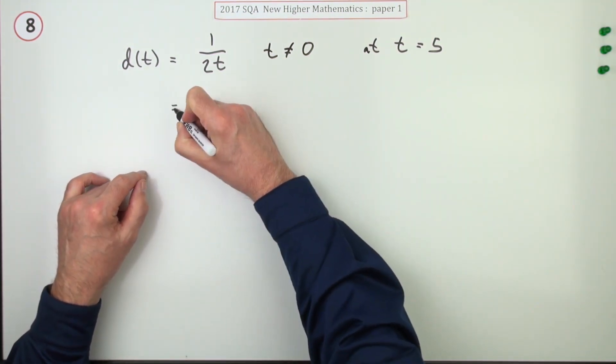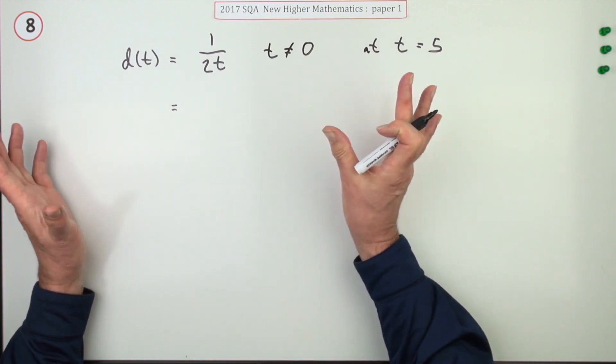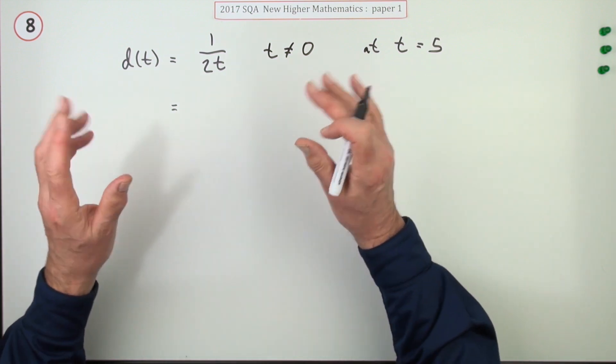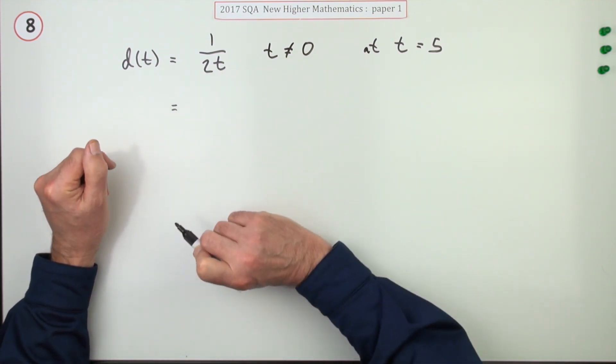This question here - rate of change simply means differentiate it. But before you can differentiate it, for the Higher, later on when you're used to doing it you don't need to go through this stage, but for the Higher write it in what's known as the differentiable form.